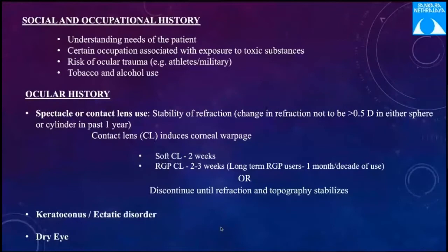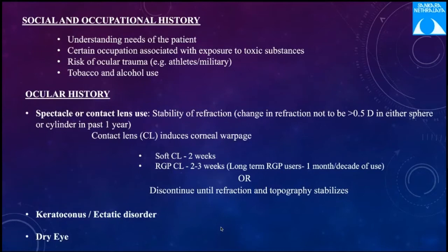Coming to ocular history, the stability of refraction is very important; the change in refraction should not be more than 0.5 diopter in either sphere or cylinder in the past one year. Contact lens history includes the type of lens, usage, cleaning and disinfecting agents, age of the lenses, and duration of wear. Before laser vision correction, soft contact lenses should be stopped for at least two weeks, rigid gas permeable lenses for two to three weeks, and long-term RGP users may need to stop for one month per decade of use or until refraction and topography stabilize.